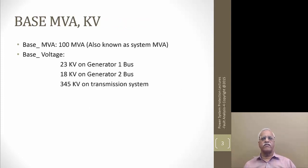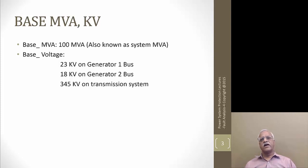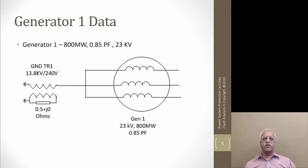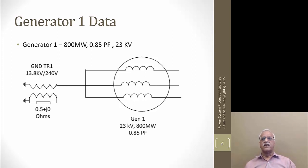Now if we look at the data, we will first determine what should be our base quantities. We assumed the base MVA as 100 MVA, also called the system MVA. The base voltage on the 23 kV side at generator one is 23 kV, for generator two it is 18 kV, and the transmission system is 345 kV. Generator one data: it is 800 megawatt, 0.85 power factor, generating at 23 kV.